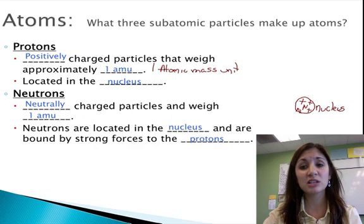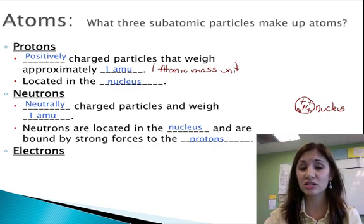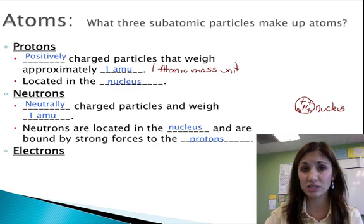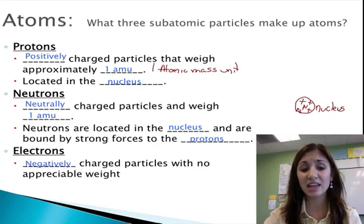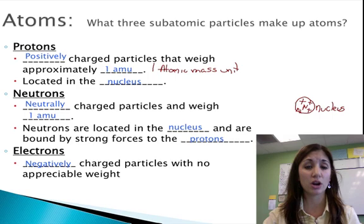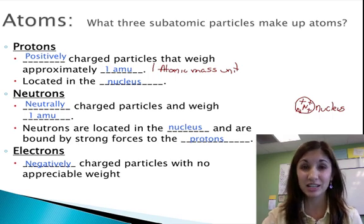Now our third subatomic particle that we'll talk about in biology is the electron. And electrons are very different than protons and neutrons. Electrons have a negative charge, and they have no appreciable weight. Their weight is so small compared to the weight of a proton or a neutron that we essentially count it as zero.